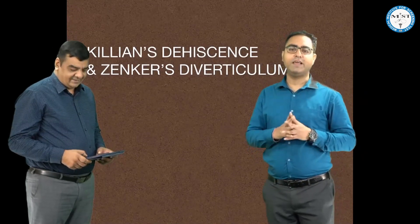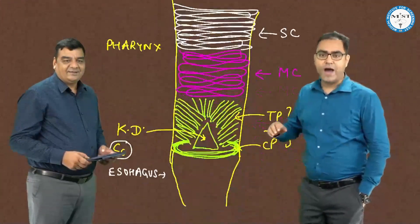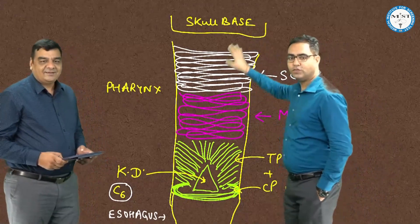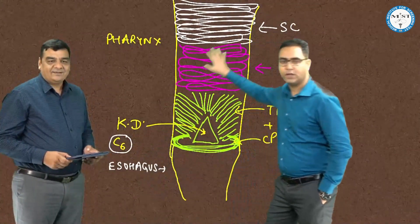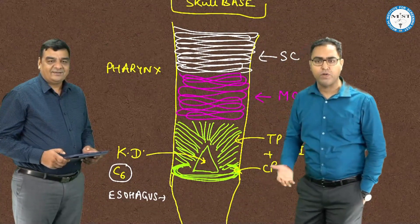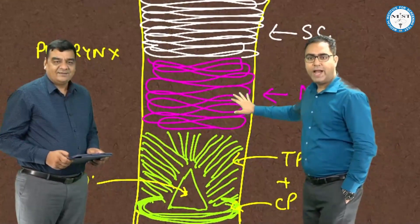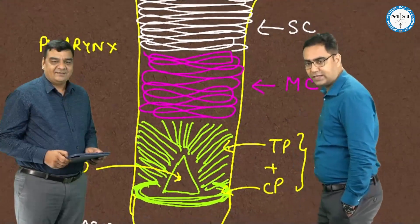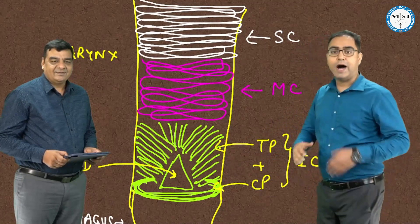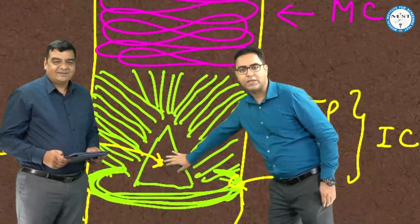Guys, for Killian's dehiscence let us first of all see the pharyngeal muscles. The pharynx is a fibromuscular tube from skull base to C6 vertebra. It has got three muscles: superior constrictor (SC), middle constrictor (MC), and the inferior constrictor (IC). Now the inferior constrictor — the green one — is the house of the Killian's dehiscence. This triangle area represents Killian's dehiscence.